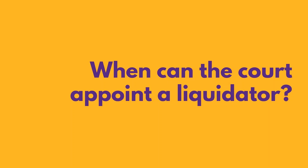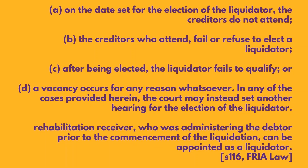When can the court appoint a liquidator? On the date set for election of the liquidator: the creditors do not attend; the creditors who attend fail or refuse to elect a liquidator; or third, after being elected, the liquidator fails to qualify or a vacancy occurs for any reason whatsoever. In any of these cases, the court may instead set another hearing for the election of the liquidator. The rehabilitation receiver who was administering the debtor prior to the commencement of the liquidation can be appointed as a liquidator.